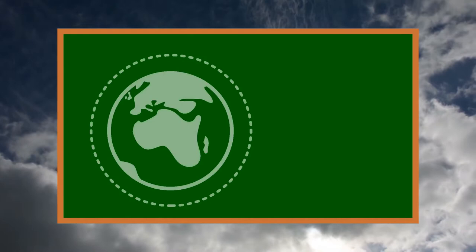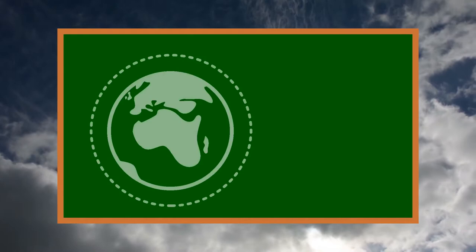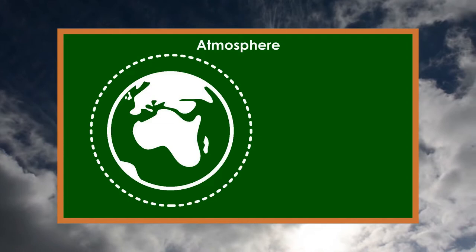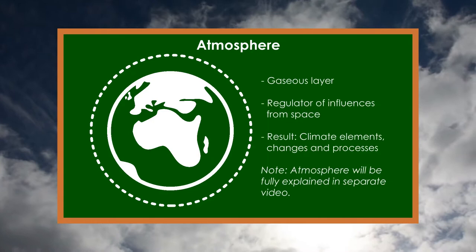All processes related to the climate take place thanks to the atmosphere. The atmosphere is the gaseous layer of the planet Earth, and has the role of a regulator of harmful influences that come to us from space, which is also the reason why we have so many different climate elements and changes.